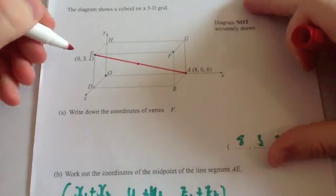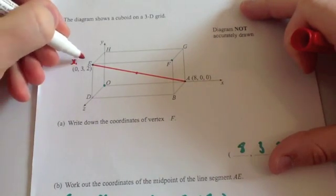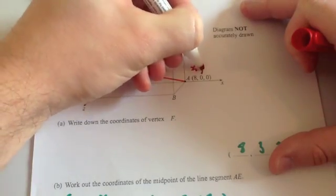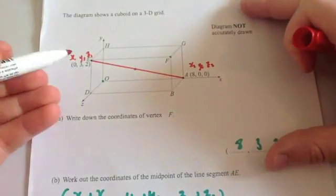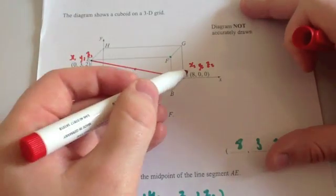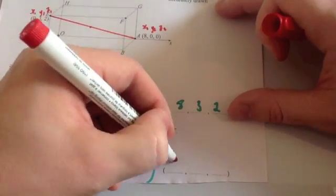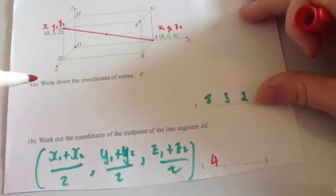So, let's call this corner x1, y1, z1. Let's call this x2, y2, z2. So x1 plus x2, so 0 plus 8 is 8, and half it would be 4.